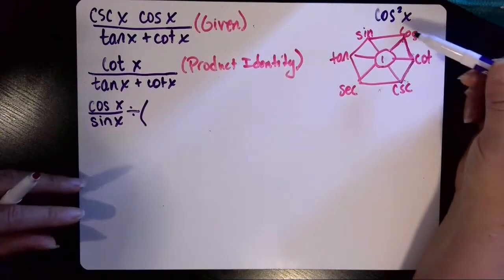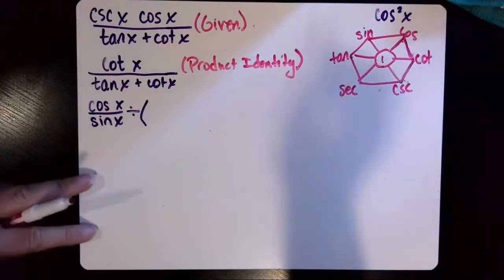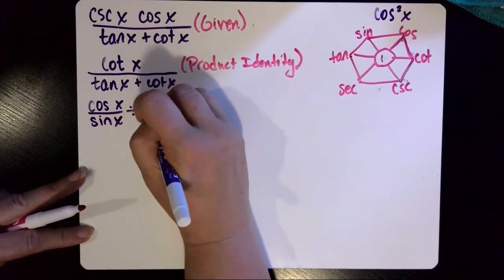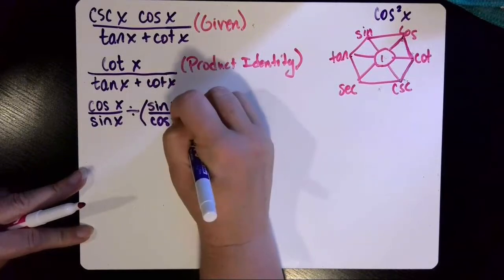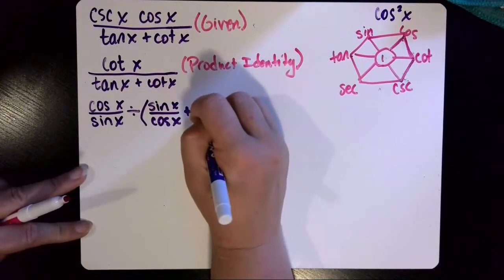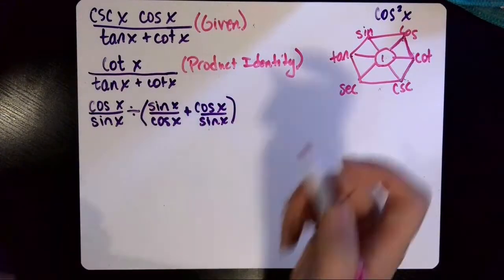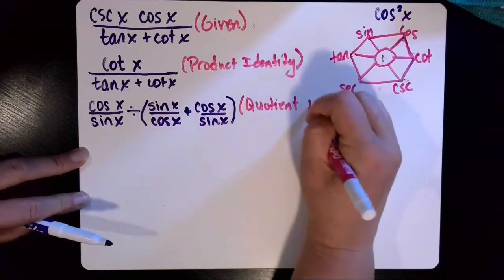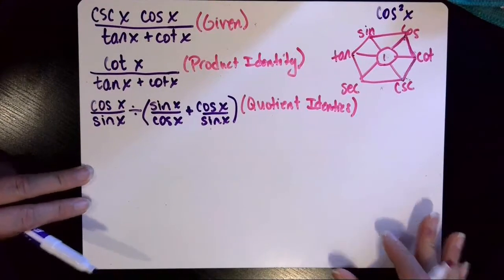And tangent of x, when I look back at my hexagon, tangent is the quotient of sine divided by cosine. So this will replace the tangent from the denominator as sine of x divided by cosine of x. And then that is plus cotangent, which we already found is the quotient cosine of x divided by sine of x. So I just applied in step three the quotient identities for cotangent and tangent.